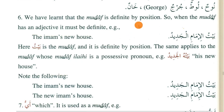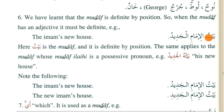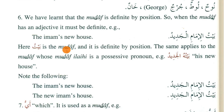You have learned that mudaaf is marfa by its position. This means mudaaf must be marfa. So here 'bayt' is mudaaf and 'jadeed' is its adjective (sifa). Since 'bayt' is marfa, 'jadeed' is also marfa. Remember: the sifa (adjective) of mudaaf is always marfa because mudaaf itself is marfa by its position.